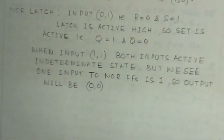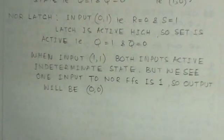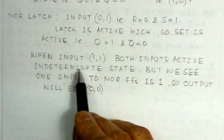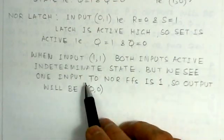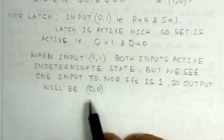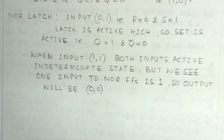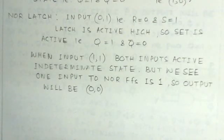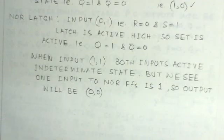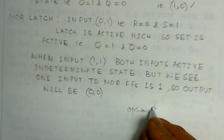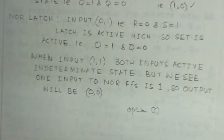To summarize: for the NOR latch with both inputs at 1, it is an indeterminate state, but since one input to the NOR gate is 1, the output is 0,0, which is unstable. Option C is the right choice here.